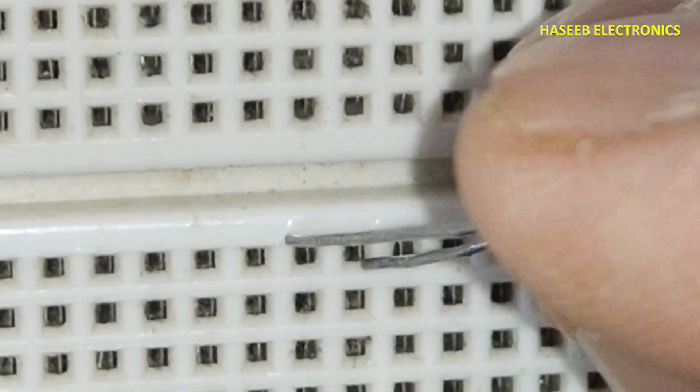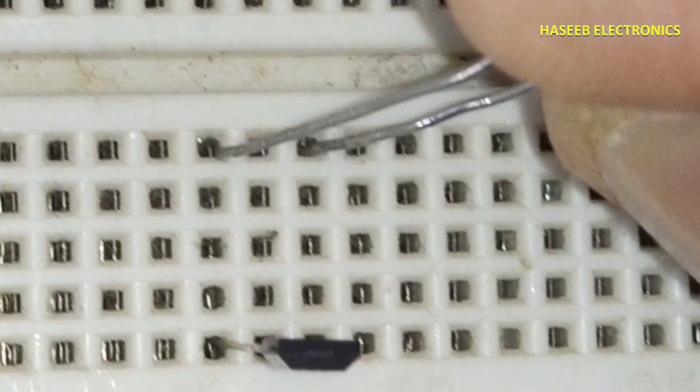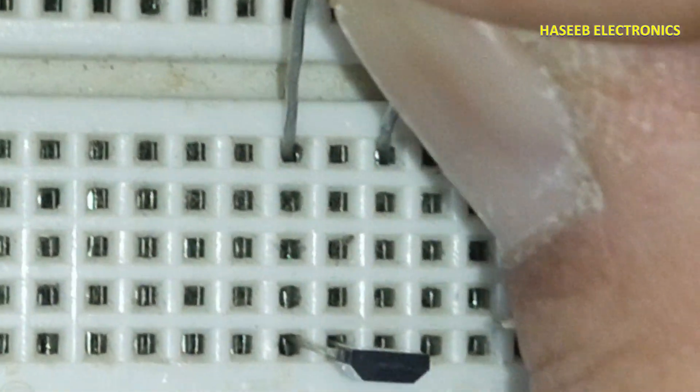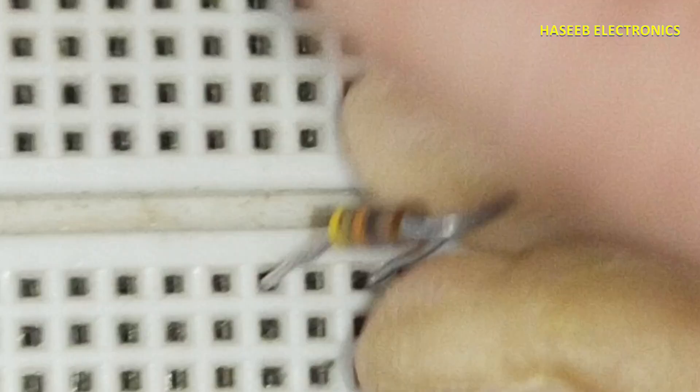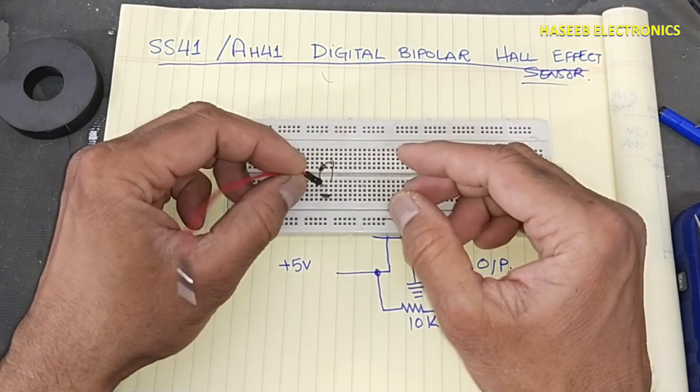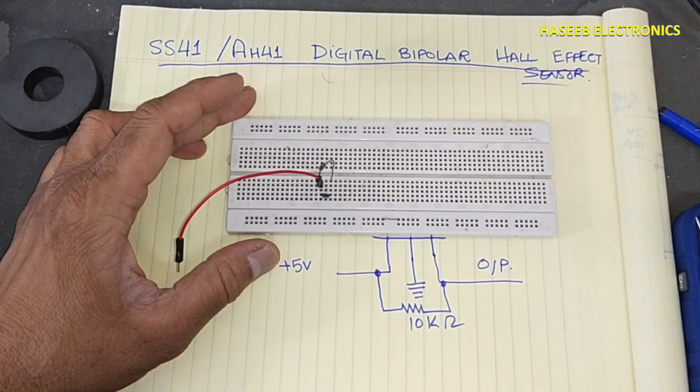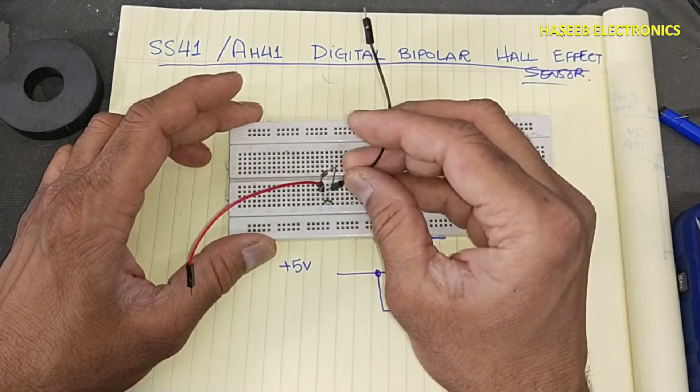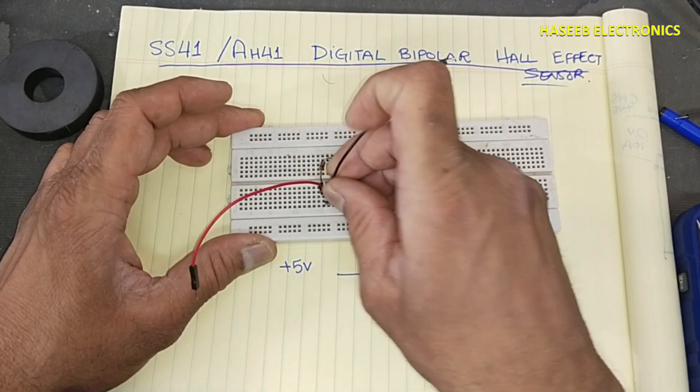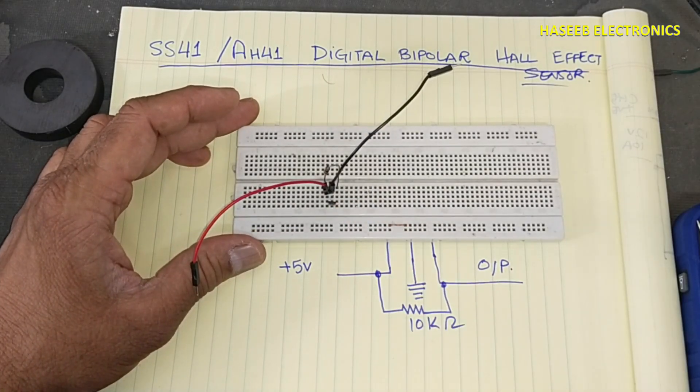I will connect a 10 kilohm resistor between pin 1 and 3. Supply voltage at pin number 1, return at pin number 2.